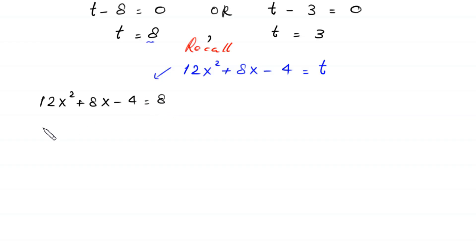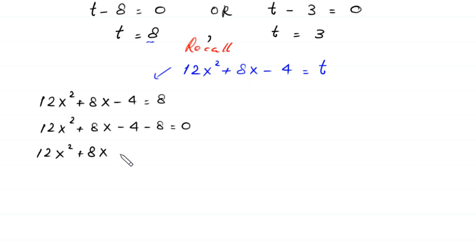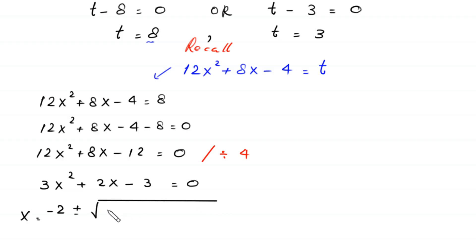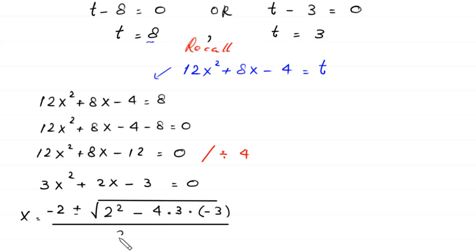Moving 8 to the left hand side: 12x² + 8x - 4 - 8 = 0. Dividing the whole equation by 4 gives 3x² + 2x - 3 = 0. This quadratic equation is not factorable, so we solve it by the quadratic formula. According to the quadratic formula, x = negative b, which is 2, plus or minus the square root of b² (which is 2²) minus 4 times a (which is 3) times c (which is negative 3), all divided by 2 times a (which is 3).